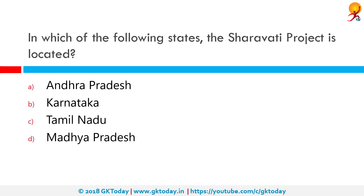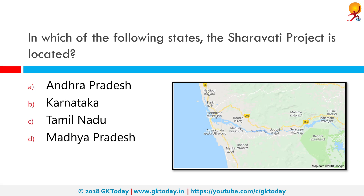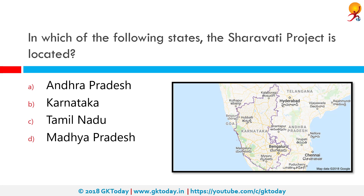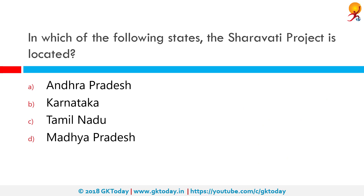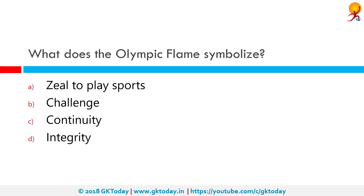In which of the following states is the Shuravati project located? The Shuravati project is located on the Shuravati River, and as you can see on the map, the river goes through the Western Ghats and is located in the state of Karnataka. So the correct answer is option B: Karnataka.